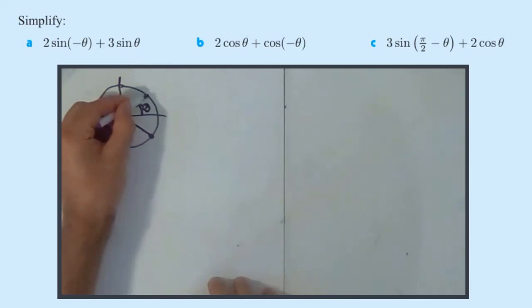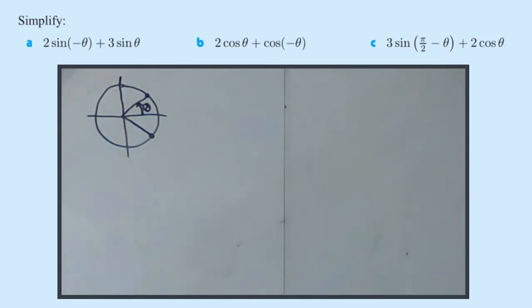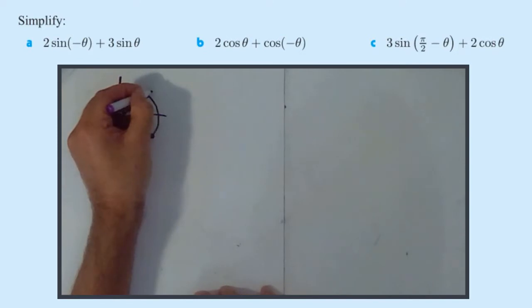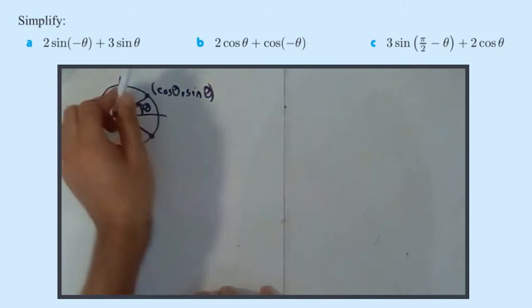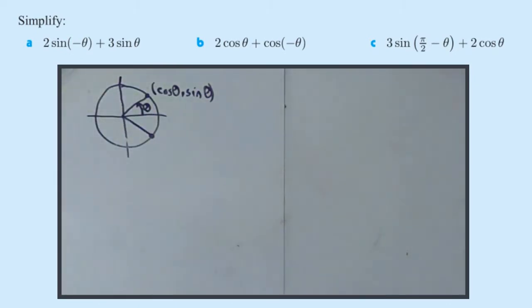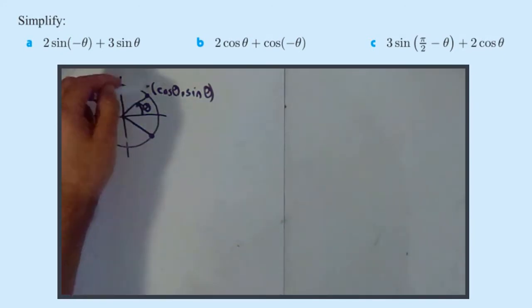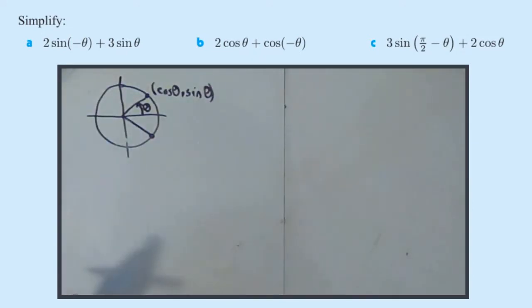And remember, where the point is, the coordinates of that point are the cos of the angle and sine of the angle. So you can see if this has coordinates (cos(θ), sin(θ)), as in the x and y on this plane, and don't forget the gradient of the line is tan(θ). Yes, it's sine over cos, of course, because that is change in y over change in x, but don't forget the gradient of that line is tan(θ) as well.